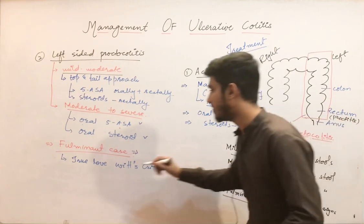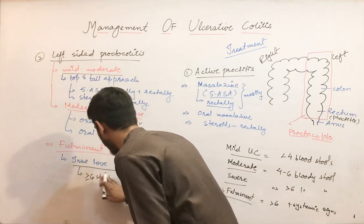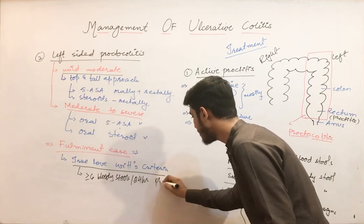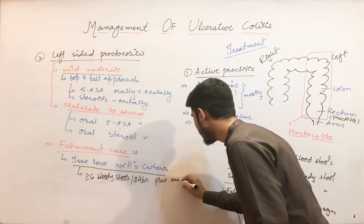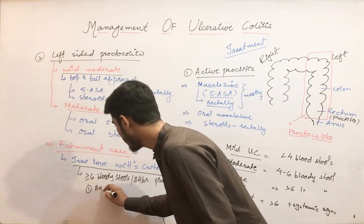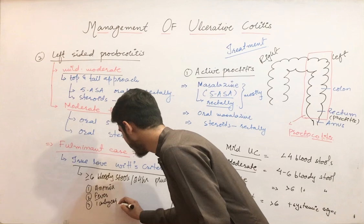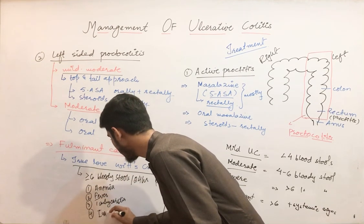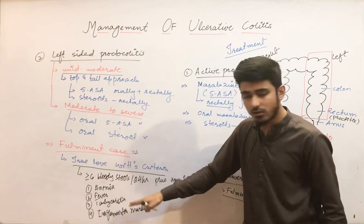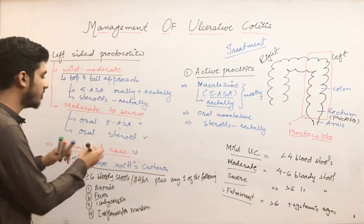The Truelove-Witts criteria: greater than six bloody stools per 24 hours, plus any one of the following four things — anemia, fever, tachycardia, or raised inflammatory markers. If a patient meets this criteria, they are called a fulminant case.